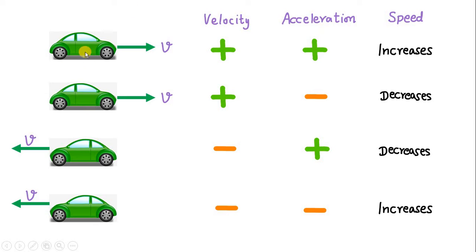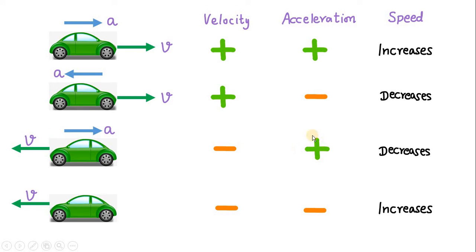Now, what about acceleration? In these four figures, in the first case acceleration is acting in the same direction as velocity — that means positive acceleration. In the second case, acceleration is acting opposite to the direction of velocity, so it has a negative sign — acceleration is leftwards, so that is the negative sign. In the third figure, acceleration is acting rightwards, so the rightward direction is positive — acceleration is positive. In the fourth case, acceleration is acting leftwards, so acceleration is negative. Whichever vector is in the rightward direction is given a positive sign, and leftward gets a negative sign.